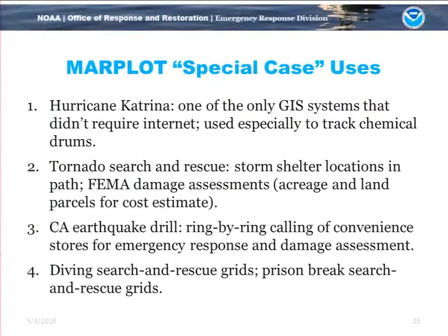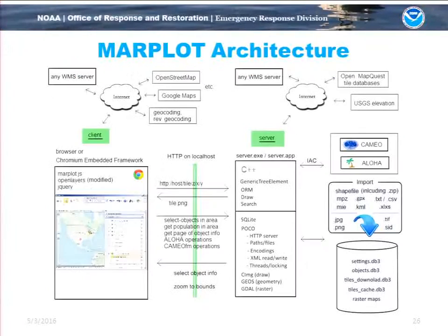Some examples of how the program is used: in Hurricane Katrina it was very useful because it was one of the only GIS systems on scene that could operate without an internet connection. There are examples of a tornado search in Canada where shelter locations were mapped to find which were actually used. In California during an earthquake drill, the ring-by-ring branching out of who to contact in order was used. The grid function is also used for search and rescue and even a prison break search.